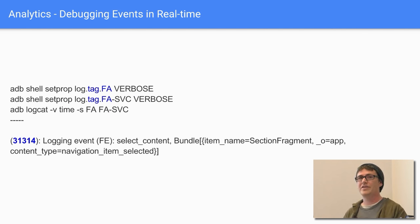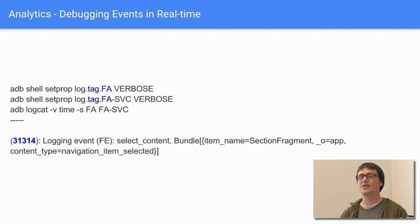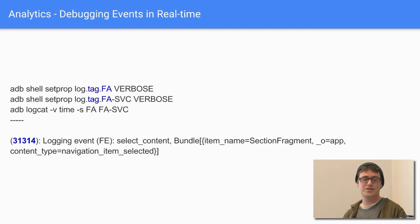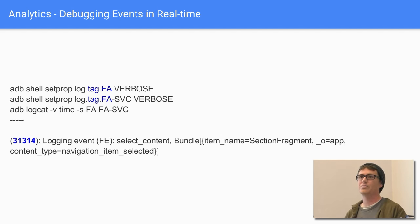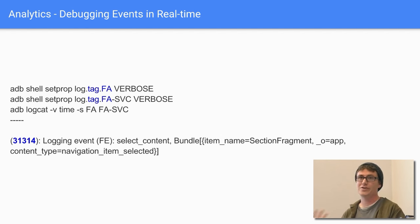Analytics events don't show up immediately in the console. If you want to print out logs through your Android app, you can run ADB shell commands — setprop and the Logcat commands shown here — and it'll log events so you can verify your analytics are working as you debug your app.